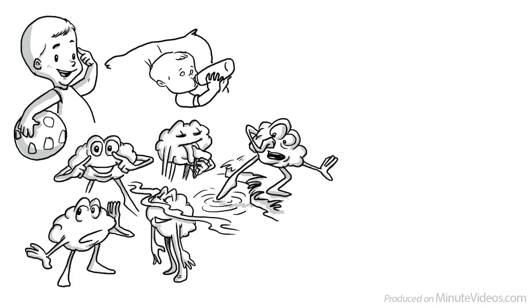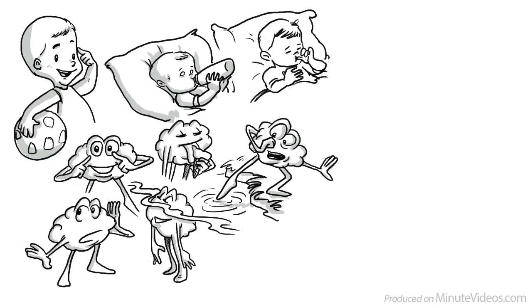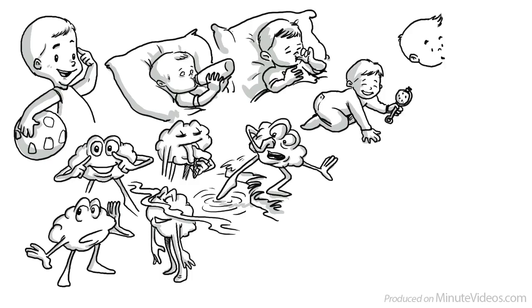First, we start with simple reflexes and soon after we develop our first habits. From four months old, we become aware of things beyond our own body. And then as we get older, we learn to do things intentionally.